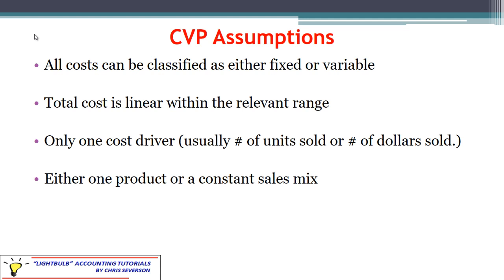There are a few assumptions before we can use cost-volume-profit analysis. First, we have to be able to identify costs as either fixed or variable. If we have any mixed costs that are both fixed and variable, we have to allocate and spread those out amongst their variable and fixed components before we can apply CVP analysis. Another assumption is that total cost has to be linear within the relevant range — we can't deal with economic curves, only straight-line costs. Also, there is only one cost driver at play: either the number of units sold or the number of dollars of sales, but only one at a time.